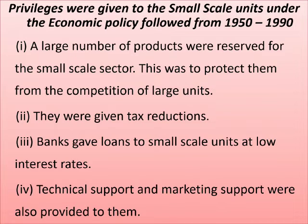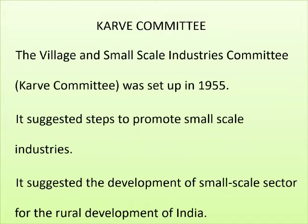Privileges were given to small scale units under the economic policy. A large number of products were reserved for the small scale sector to protect them from competition by large units. They were given tax reductions, banks gave loans at lower interest rates, and technical and marketing support were also provided. The Karve Committee — the Village and Small Scale Industry Committee — was set up in 1955. It suggested steps to promote small scale industries and recommended the development of the small scale sector for rural development in India.